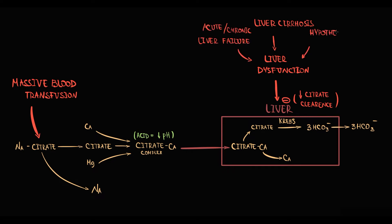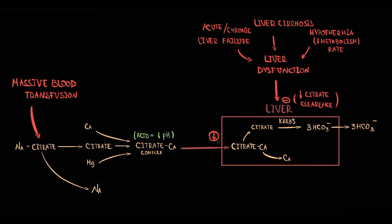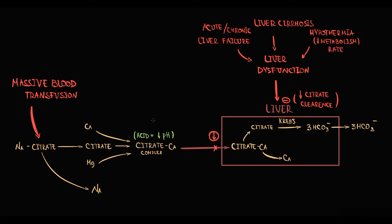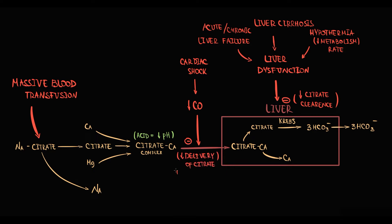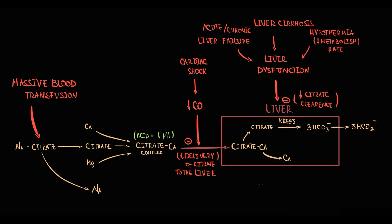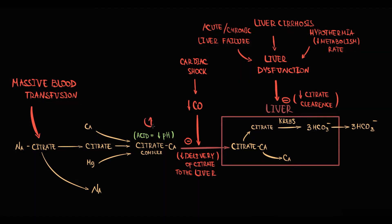Severe hypothermia can significantly decrease the metabolism rate in liver tissue, thereby decreasing citrate clearance and causing increasing citrate levels in the blood. Another reason is decreased cardiac output — for example in cardiogenic shock, lower cardiac output reduces the delivery rate of citrate to the liver, thereby decreasing citrate clearance and causing accumulating citrate in the blood.